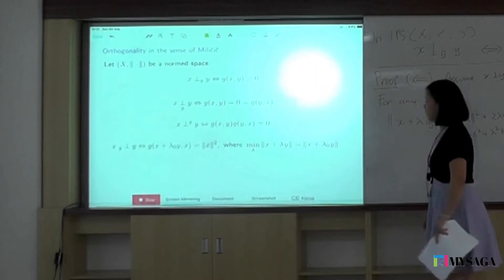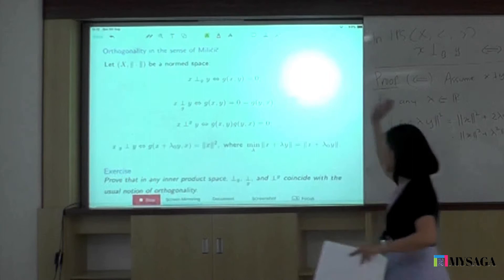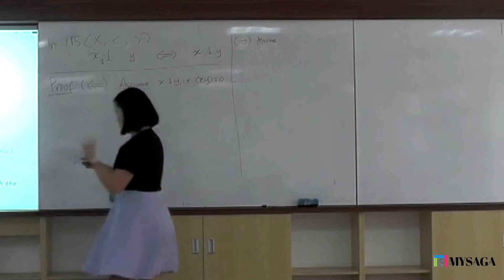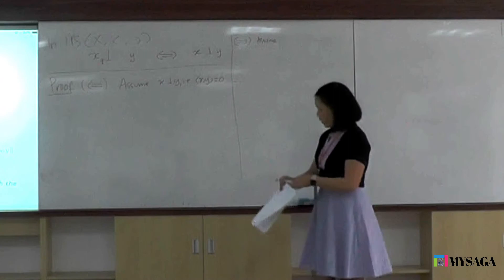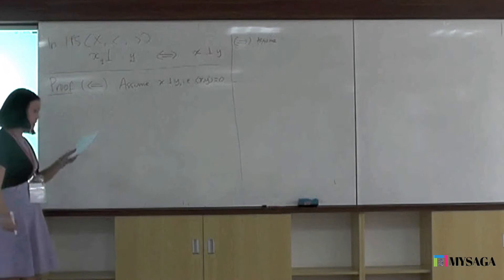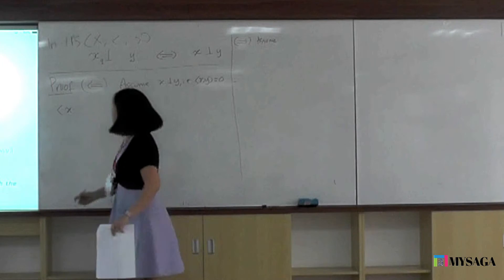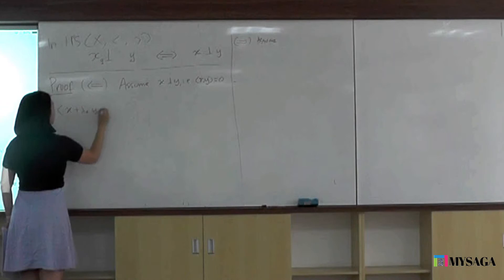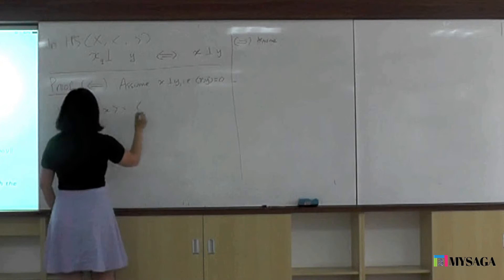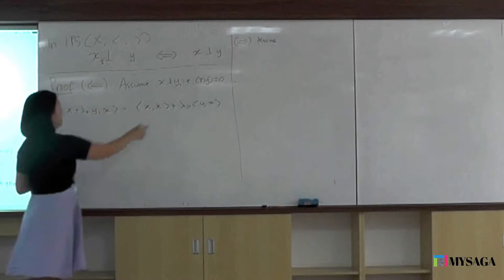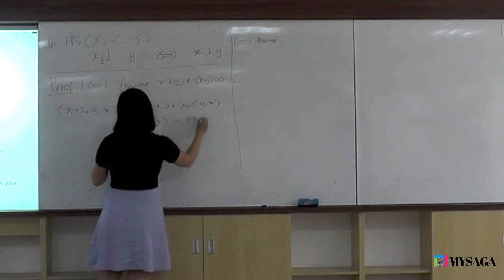More homework: prove that in any inner product space, all four of Milicic's orthogonalities coincide. I'll do the fourth one. The fourth one is very interesting. In an inner product space, G is exactly the inner product. So we have the inner product of x plus lambda_0 y with x equals norm x squared. Expanding using linearity of inner product, we get inner product of x with x plus lambda_0 times inner product of y with x. For that to equal norm x squared, we need lambda_0 times inner product of y and x equals zero.